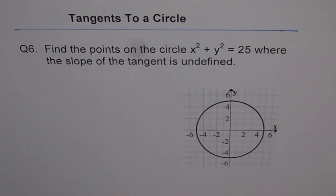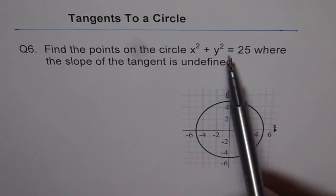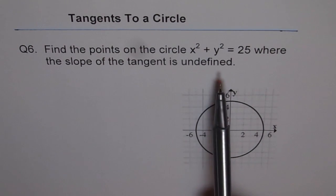Tangents to a circle. Question 6. Find the points on the circle x squared plus y squared equals 25 where the slopes of the tangent is undefined.